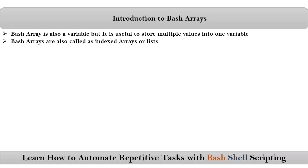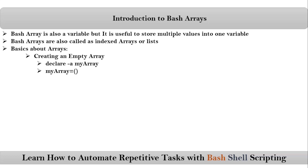Bash arrays are also called indexed arrays or lists. Now let's go with the basics about arrays. Suppose if you want to create an empty array, you can use one of these two syntaxes: 'declare -a' followed by your variable name, or your variable name equals to parenthesis. While choosing a variable name for your array, you have to follow the same rules used to create a normal variable name.